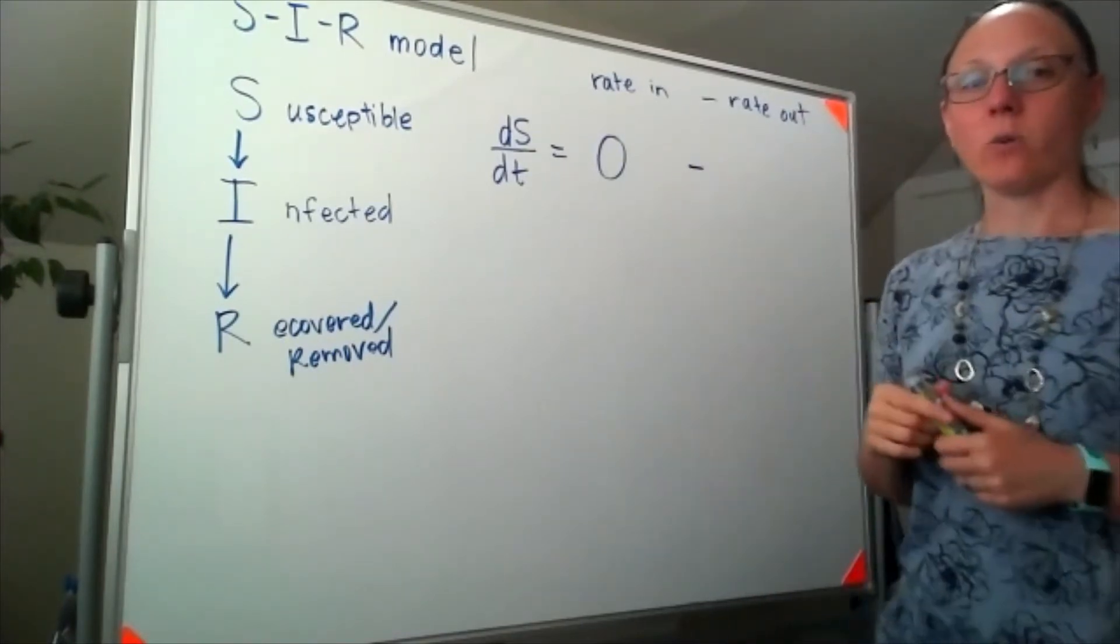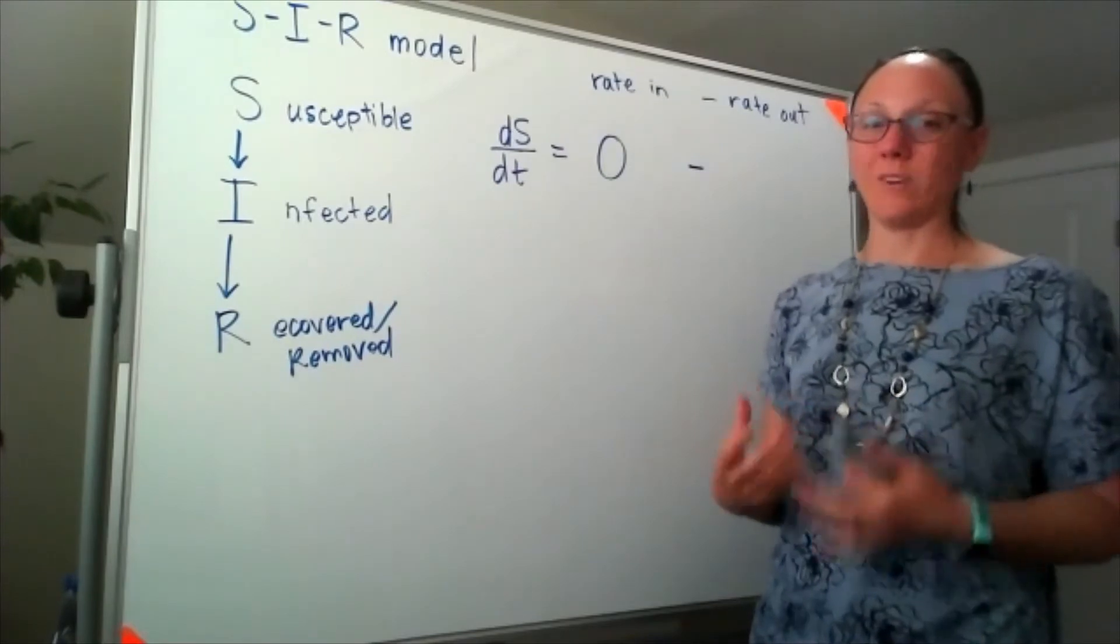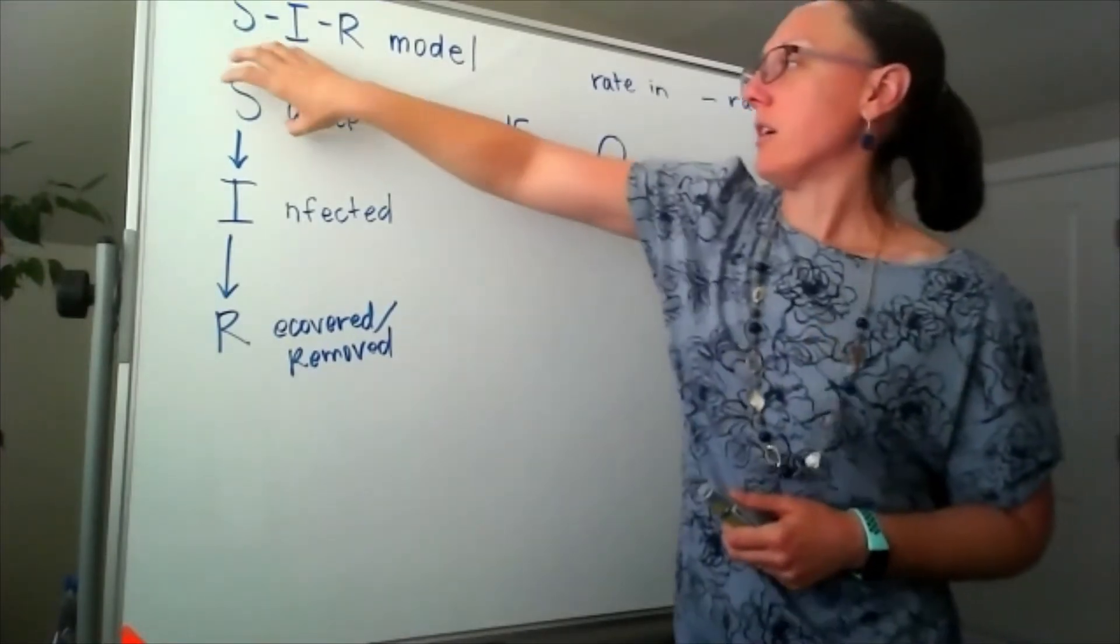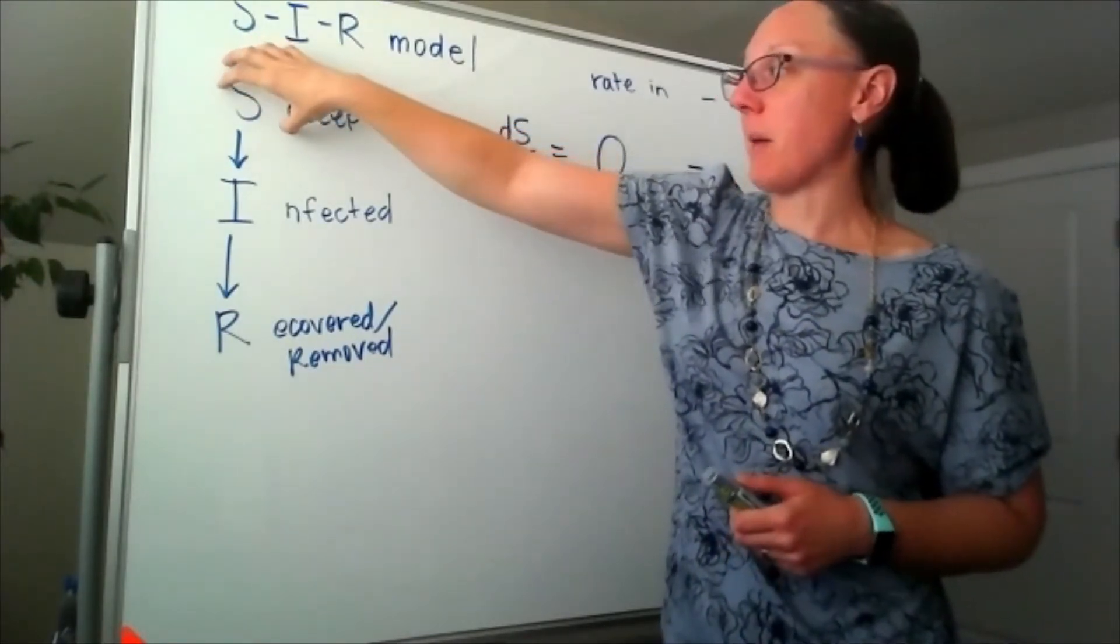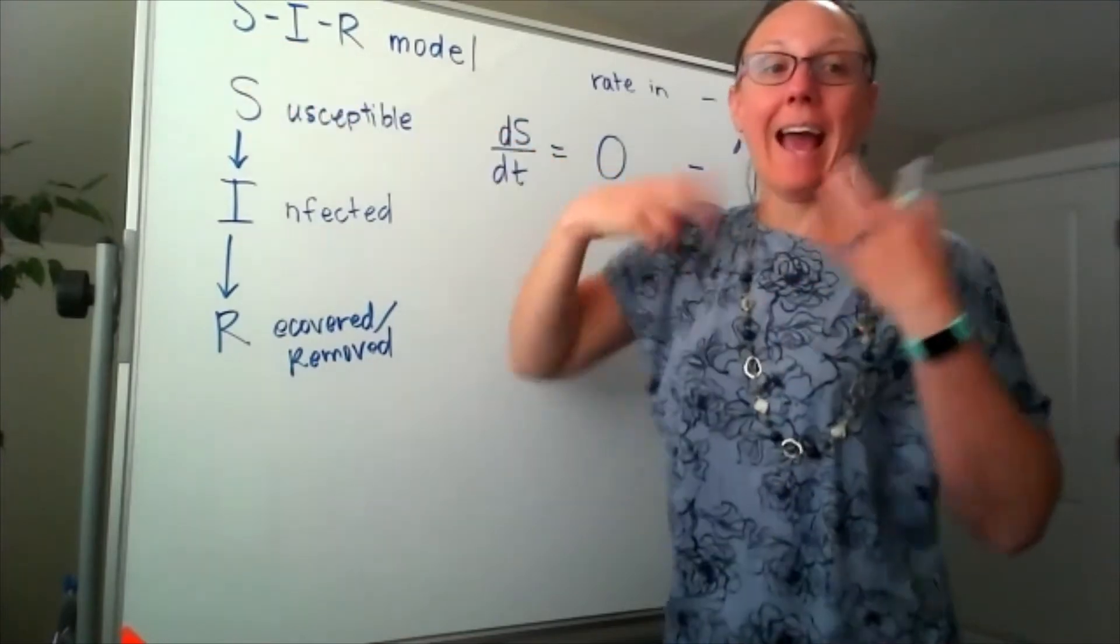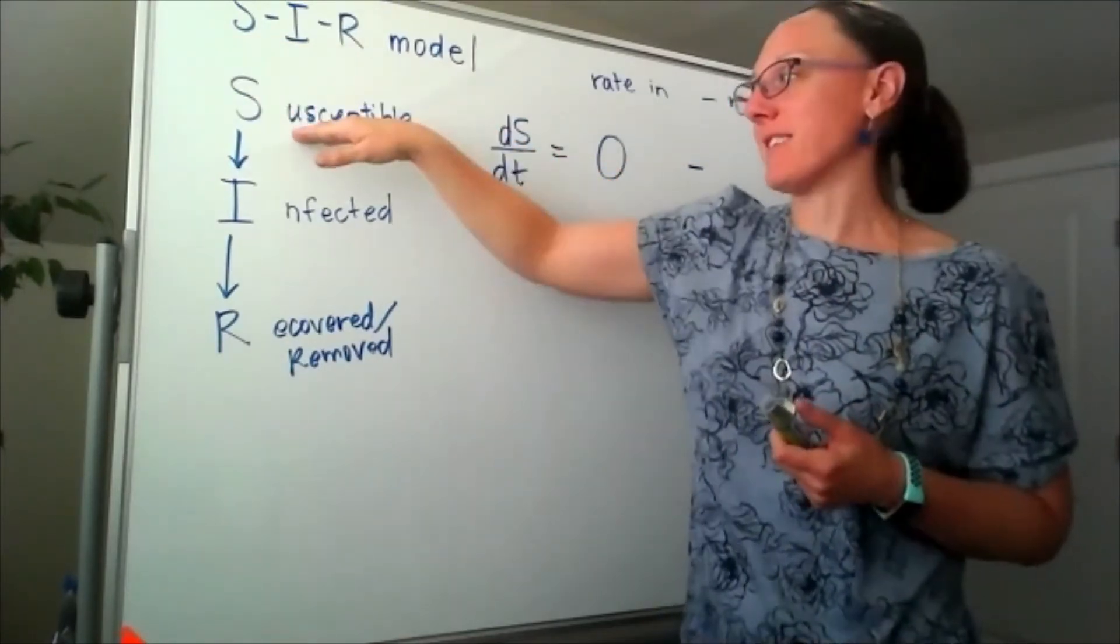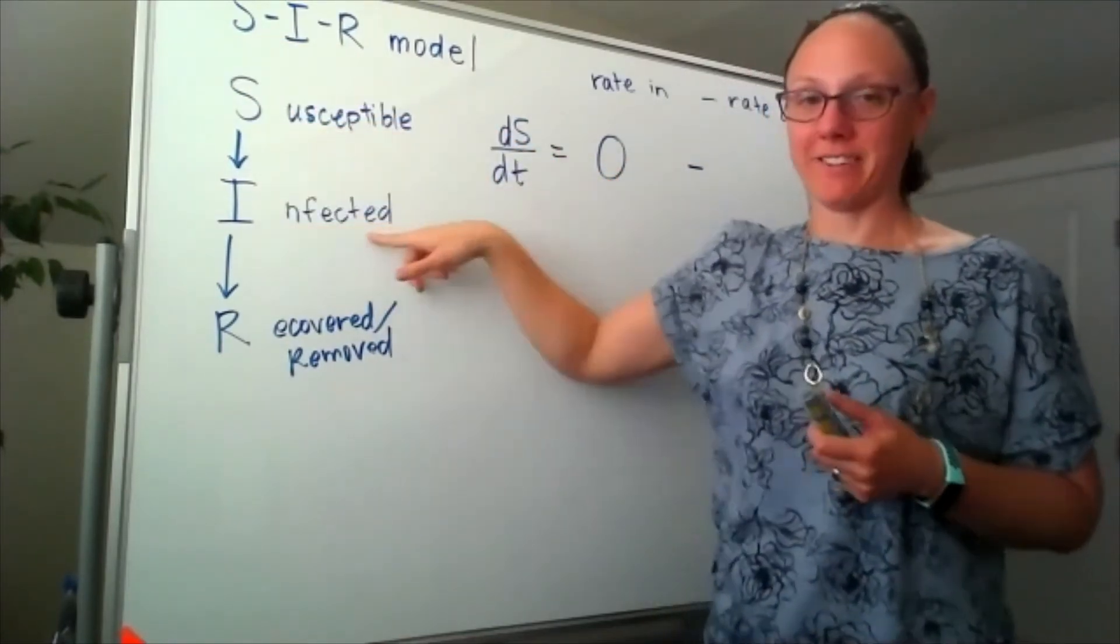In terms of that rate out, we want to think about what's happening. Our population that is susceptible - the reason it's moving out of susceptible is because it's moving into the infected population.